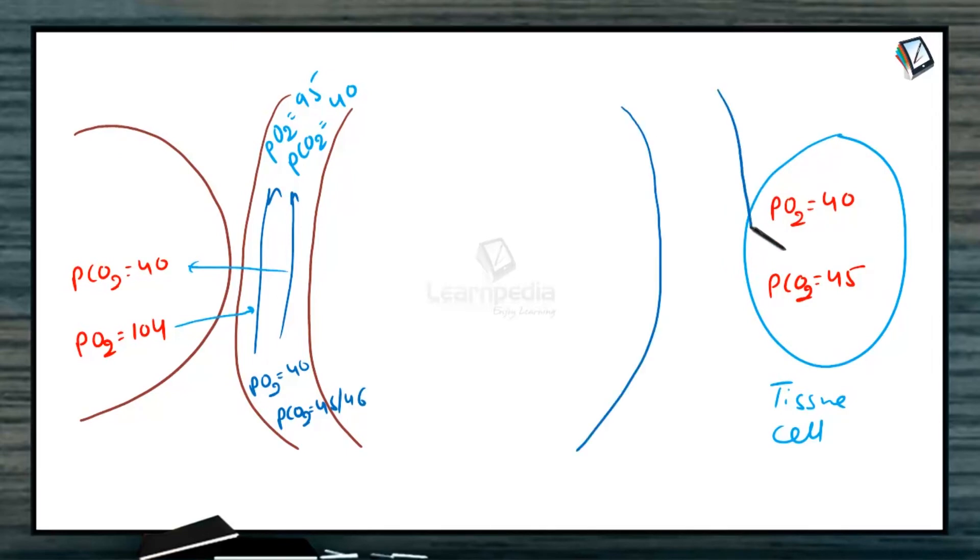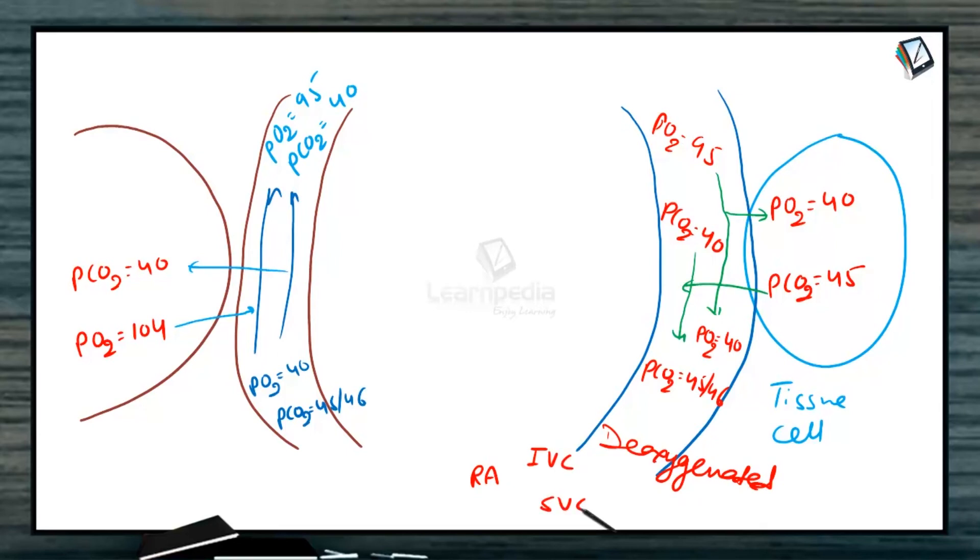When oxygenated blood will try to pass near to tissue cells having PO2 95 and PCO2 40, due to difference in pressure, oxygen gets released to tissue cells and CO2 will come out from tissue cells. This exchange will lead to pressure of oxygen to 40 and pressure of CO2 to 45 or 46. The blood again gets deoxygenated and then this deoxygenated blood from all the parts of body gets collected in right atria via inferior vena cava and superior vena cava. From right atria to right ventricle and again to lungs by pulmonary artery.